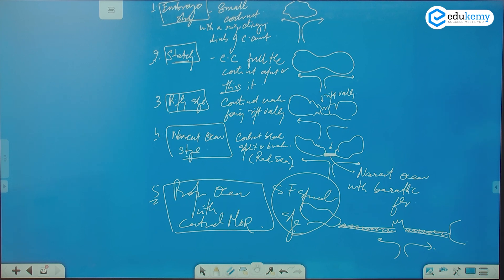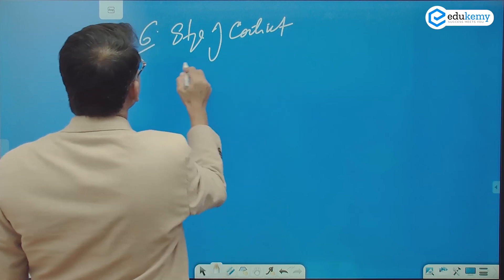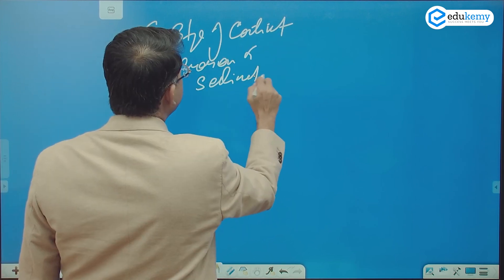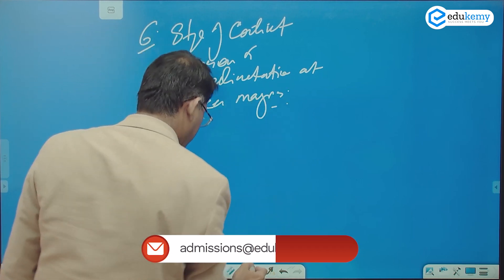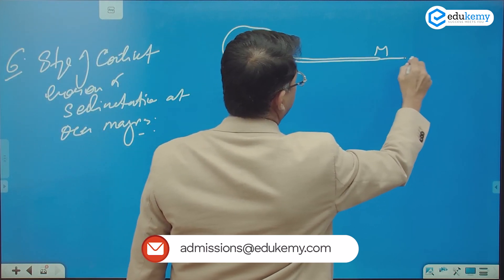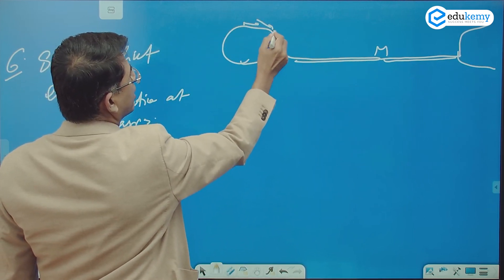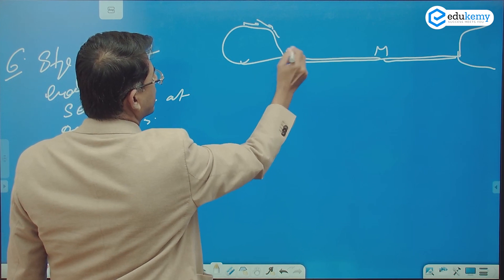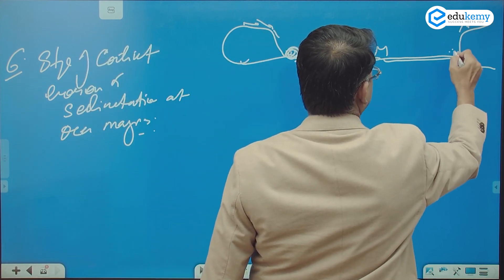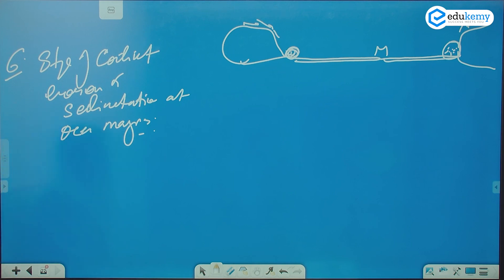Stage six is continent erosion and sedimentation at the ocean margins. Material erodes from the continent and starts accumulating at the ocean margins, building up sediment deposits along those edges.